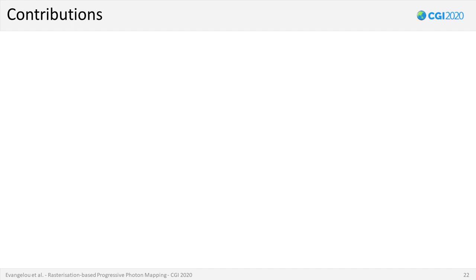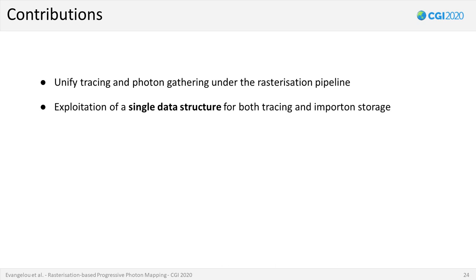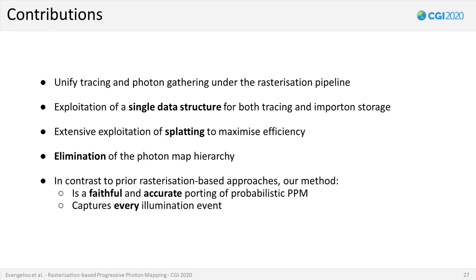Taking these factors into consideration and exploiting a ubiquitous pipeline that is independent of the GPU architecture such as the rasterization pipeline, the hierarchy construction can be replaced with a highly parallel process to resolve the gathering step while maintaining query performance. Consequently, in this work we focus on unifying both tracing and photon energy distribution stages under the hood of the rasterization pipeline. This will enable us to implicitly couple the importon storage with the tracing architecture and fully utilize splatting, a highly parallel process to effectively distribute photon energy flux. As a result, the construction of a photon hierarchy can be completely omitted. This is in sharp contrast to prior rasterization-based photon mapping approaches, as our method is the first to demonstrate a faithful and accurate porting of the algorithm to the rasterization pipeline that captures every illumination event without approximations and energy loss.